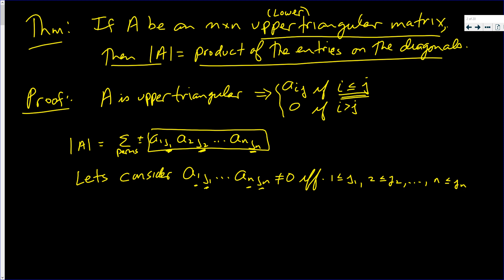Now, j1, j2, all the way down to jn are the numbers 1 through n. The only way that 1 ≤ j1, 2 ≤ j2, ..., n ≤ jn is satisfied is if the permutation is exactly the identity permutation: j1=1, j2=2, ..., jn=n.